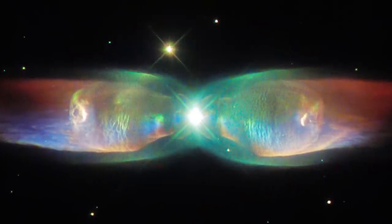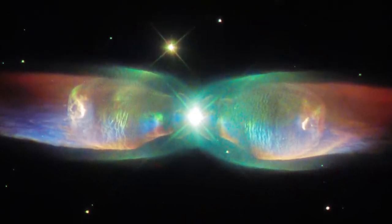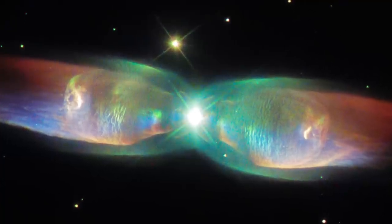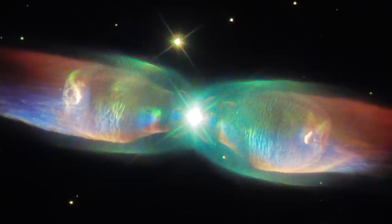The Twin Jet Nebula has a rather different appearance from the Ring Nebula, with two iridescent lobes of material stretching outwards from the nebula's centre.